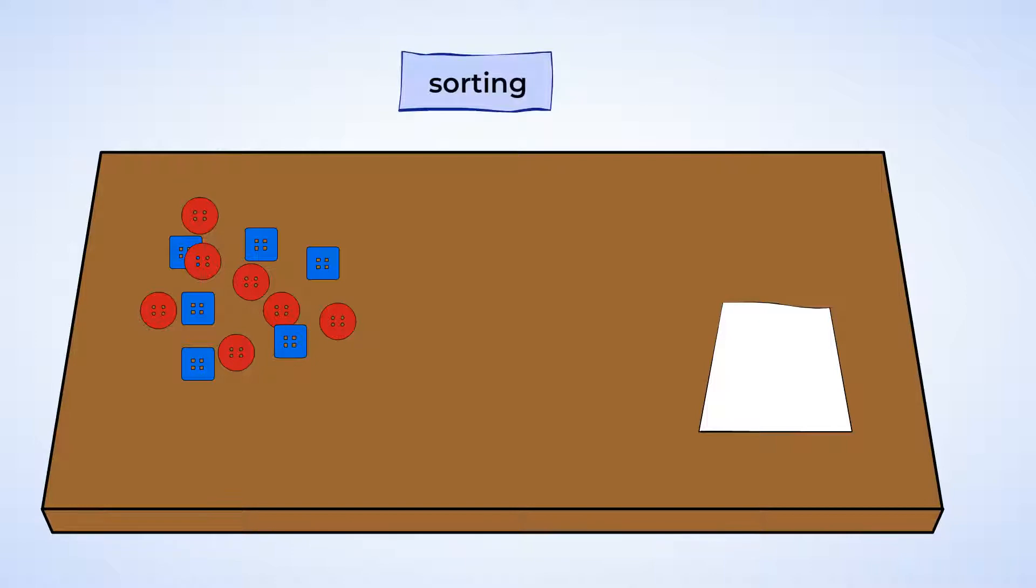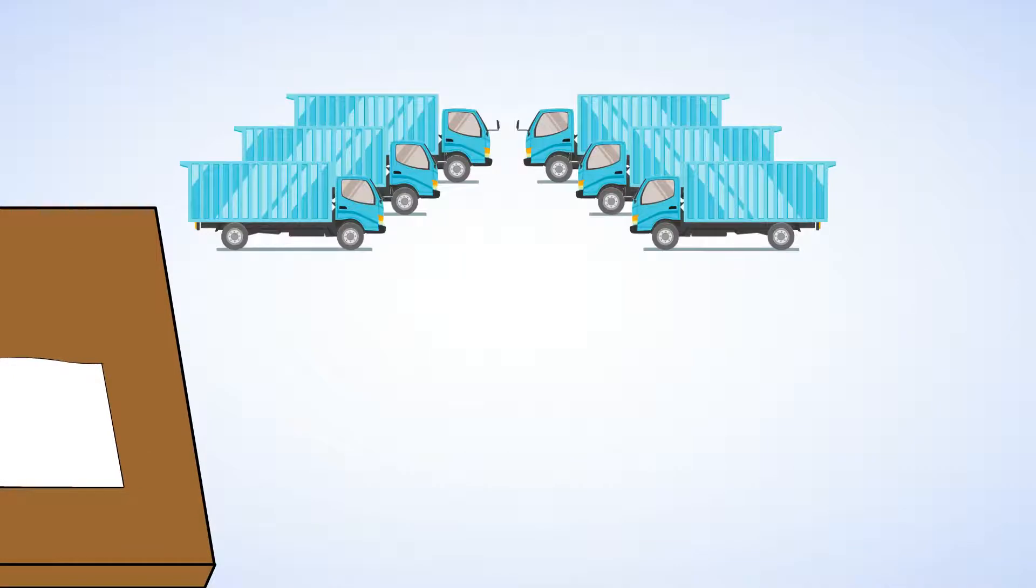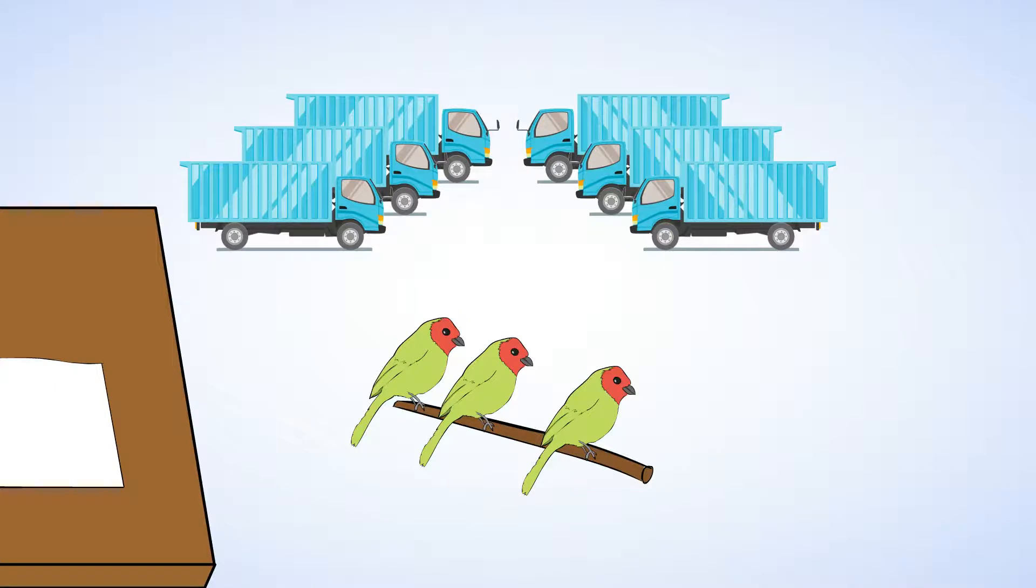Sorting, that's when you make a group of things that have something in common. Like all red buttons and all blue buttons, or all large trucks, or all green birds with red heads.